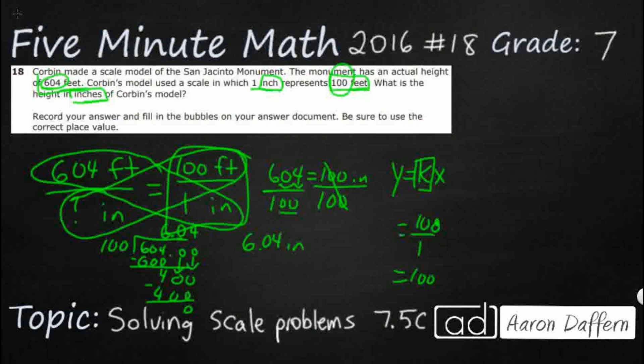The only thing we need to realize is that this 604, this is our dependent variable because that's the actual height. What we need here is our x, our independent variable, how many inches it starts with. And then once we do that, guess what? We're doing the same thing. We're just dividing both sides by 100.